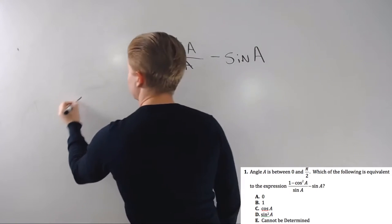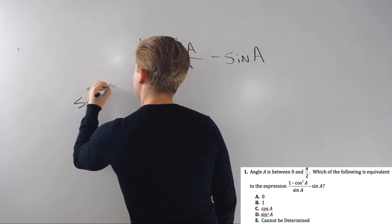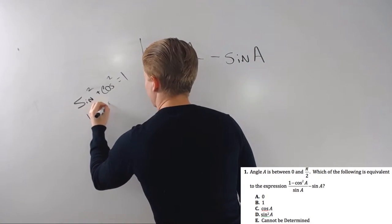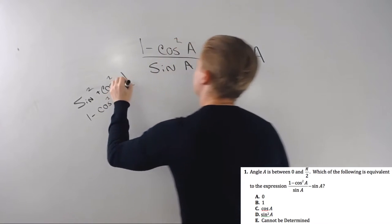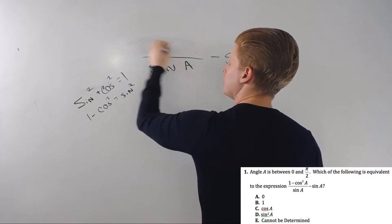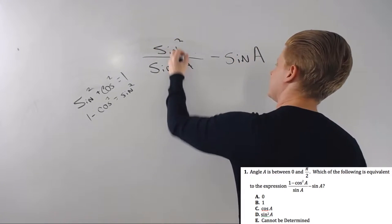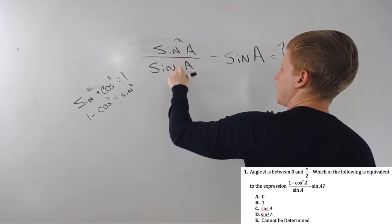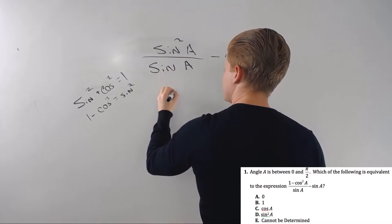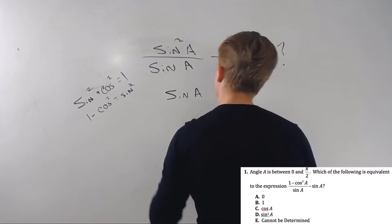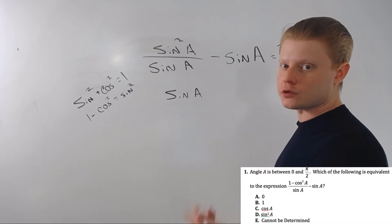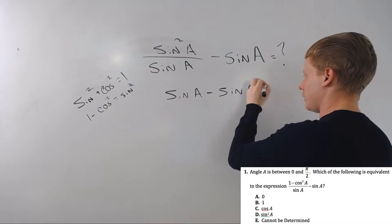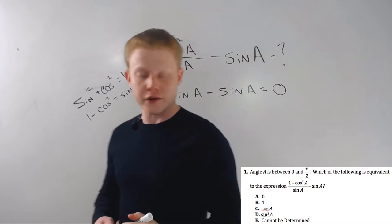Well, remember sine squared plus cosine squared equals one, so I can rearrange this and say 1 minus cosine squared equals sine squared. So let's substitute that back in: sine squared divided by sine of A minus sine of A. Well, sine squared divided by sine of A will just be sine of A—you divide something by its square root, it'll just be that square root—minus the sine of A. Something subtracted by itself would just equal zero. Fairly straightforward if you know that.